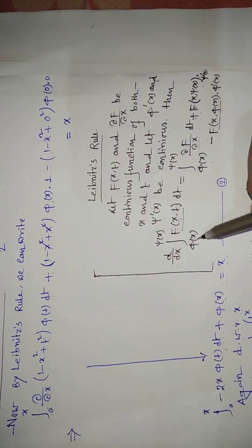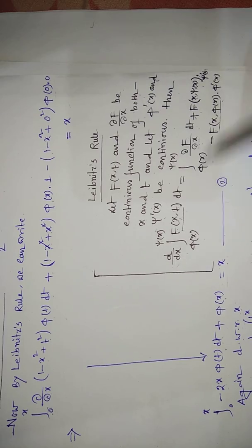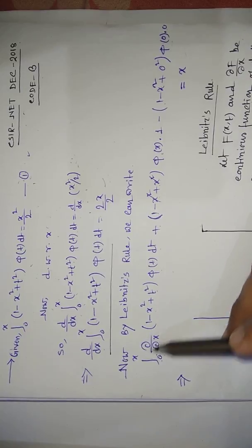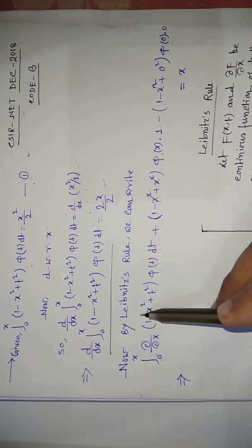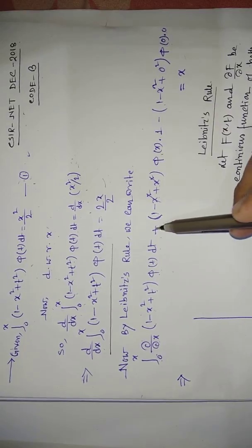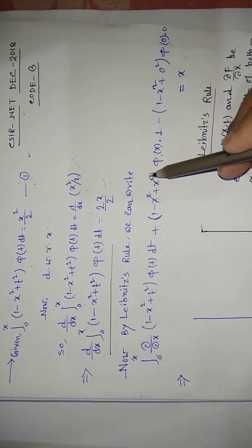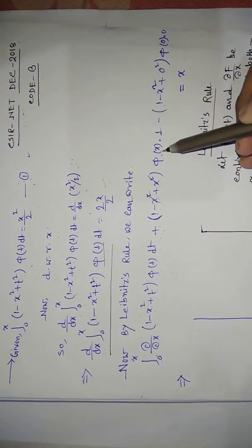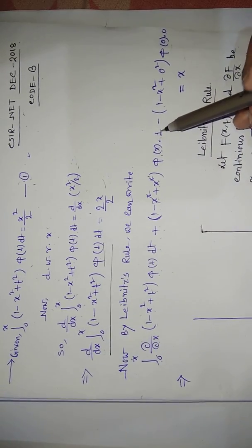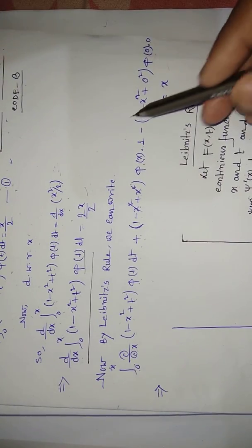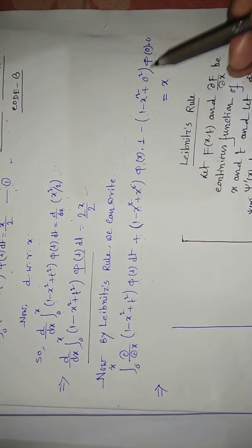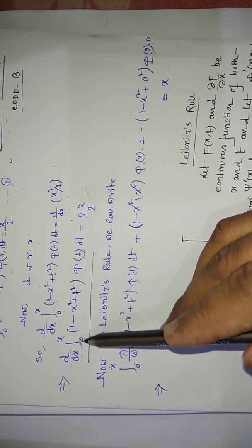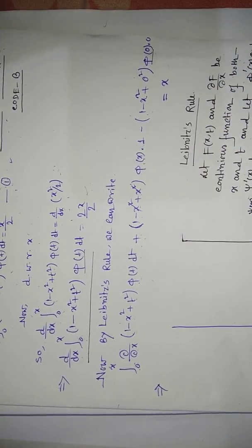...plus f(x, ψ(x))·ψ'(x) minus f(x, φ(x))·φ'(x). Applying this lemma, we get the integral of ∂/∂x(−x² + t²)φ(t) dt plus (−x² + x²)φ(x)·1 minus (−x² + 0)φ(0)·0, which equals 1.